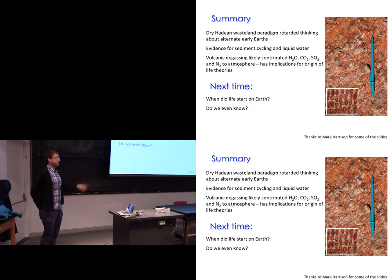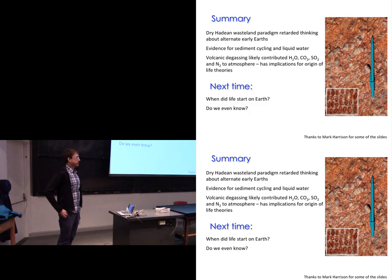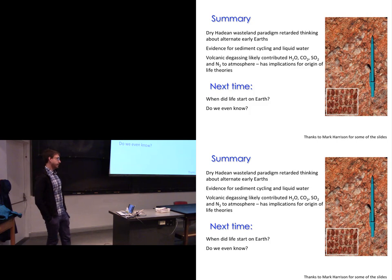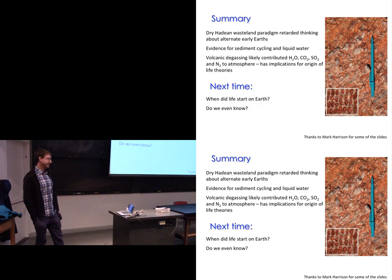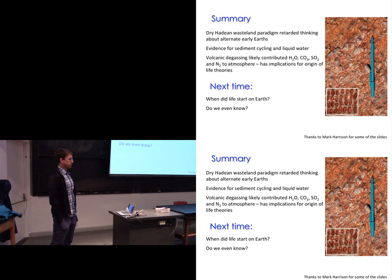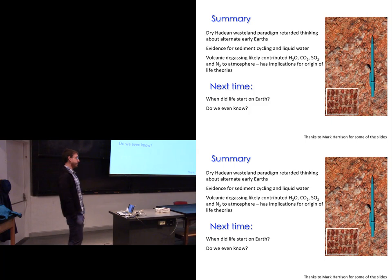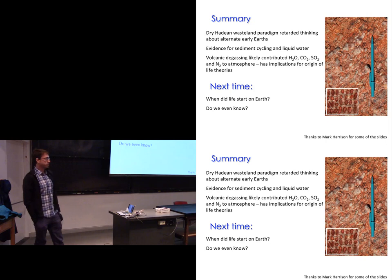The Miller-Urey experiment did not prove anything about life on Earth, but could have implications for how life could get started on other bodies in space with very reducing atmospheres. It probably does not have much bearing on how life originated on this planet, simply because their atmospheric composition is far more reducing than what we observe for the early Earth.